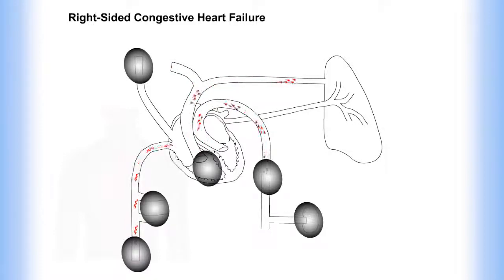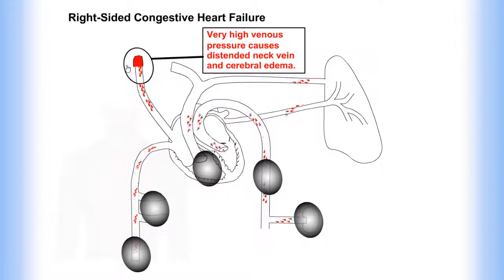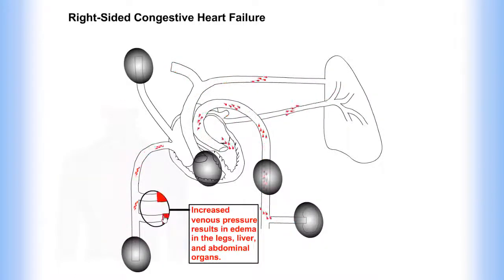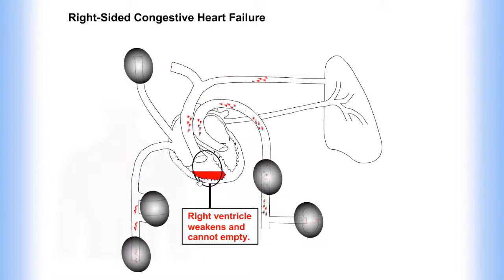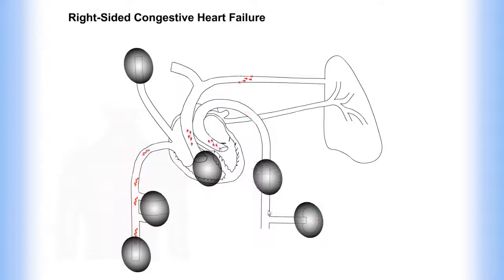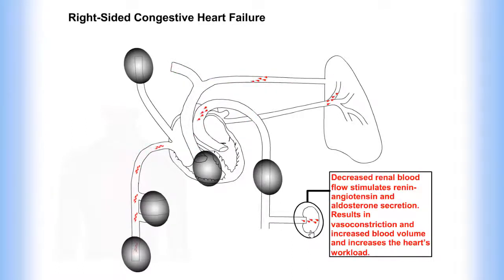Right-sided congestive heart failure. Very high venous pressure causes a distended neck vein and cerebral edema. Blood backs up into the systemic circulation. Increased venous pressure results in edema in the legs, liver, and abdominal organs. The right ventricle weakens and cannot empty. Cardiac output to the system is decreased. Decreased renal blood flow stimulates renin-angiotensin and aldosterone secretion, resulting in vasoconstriction and increased blood volume, which increases the heart's workload.